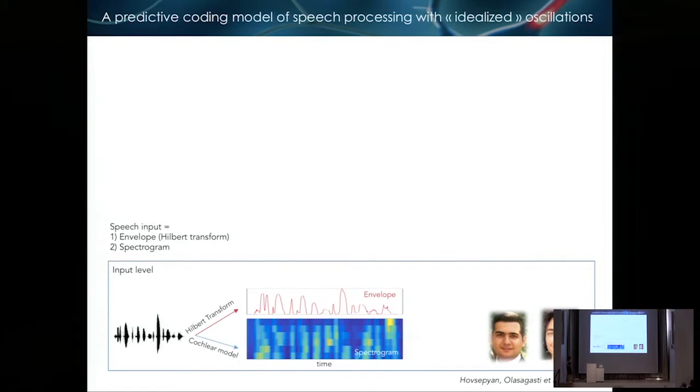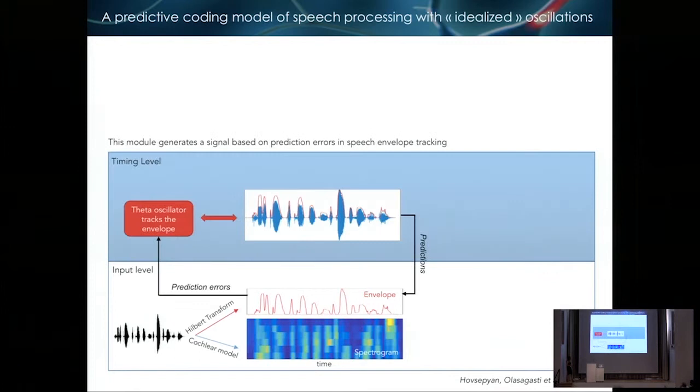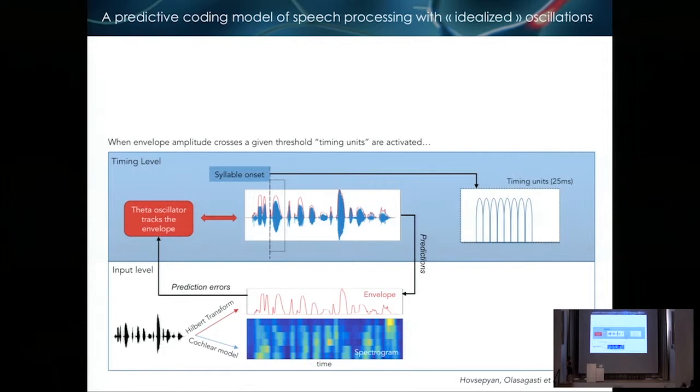One would be to create realistic oscillation models, the same kind as I showed you before, with spiking neurons. But it's going to be very difficult. Because we need several stages. We need auditory cortex plus a stage where there is integration, a word level or syllable level. So it's going to be difficult. Or we go for a predictive coding model with idealized oscillation, which is an easier way. And I just want to show you a few slides about this work. So this is a work that's done currently by Cevada, Hofsepian, and Itza Sola Sagasti. So this model has an input level where, from speech, there are two things that are extracted, the envelope and the spectrogram.